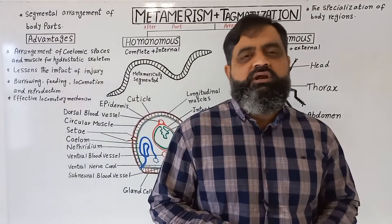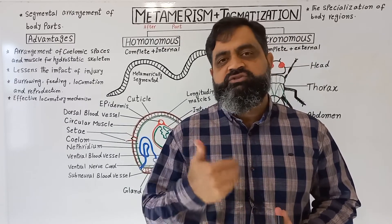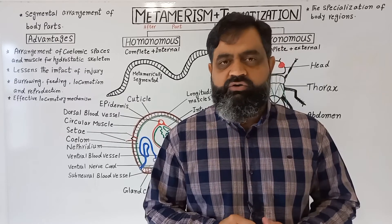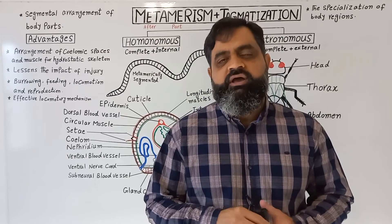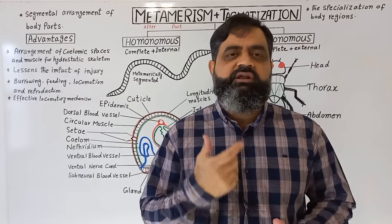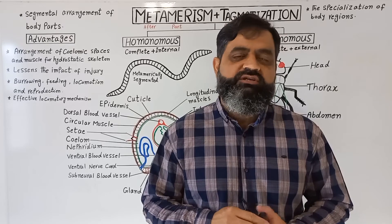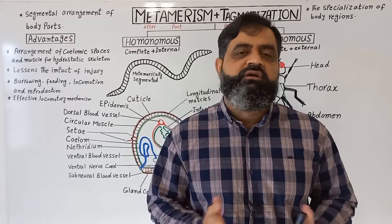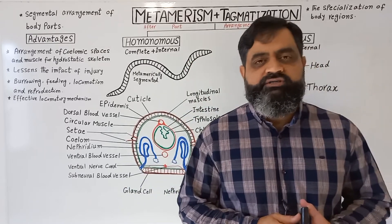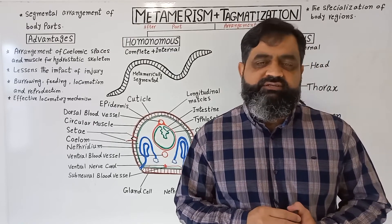In the same way, tagmatization can also be seen in human beings. Our body is composed of a head, which is a tagmata located anterior to the body — this is also known as cephalization. Then there is a neck which holds the head, then a trunk which contains all the visceral organs and cavities, and then appendages — arms and legs — which help in locomotion. That is all for today. I hope tagmatization and metamerism make sense, and I will see you in the next lecture. Until then, bye.